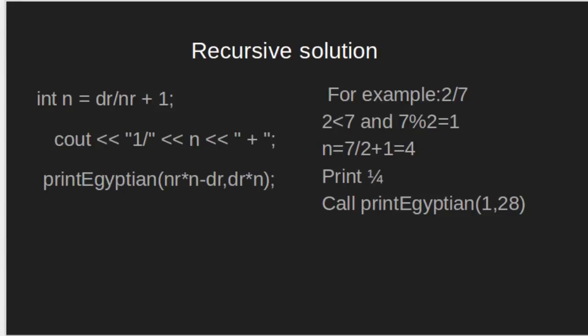Now, if all the above conditions fail, when numerator is less than denominator and denominator is not divisible by numerator. For example, 2 by 7, 2 is less than 7 and 7 modulo dr is not equal to 0. Then, n equals 7 by 2 plus 1, which is 4 and we print 1 by 4 and call printEgyptian for the remaining part, which is 1 by 28.